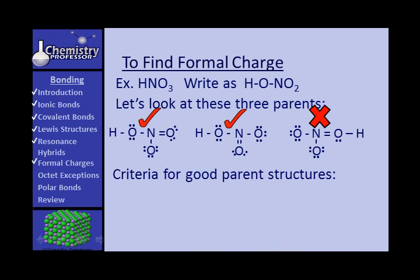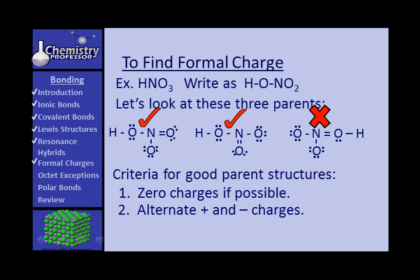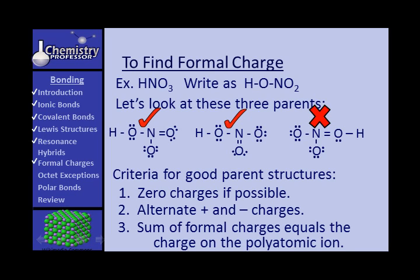What are the criteria for good parent structures? First, zero charges if at all possible — we couldn't come up with a parent with all zero charges this time. Second, alternate positive and negative charges. Third, the sum of formal charges must equal the charge of the polyatomic ion. In effect, this is a hybrid of three contributing parents, but the first two contribute by far the greater amount to the structure of the hybrid.